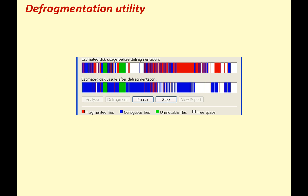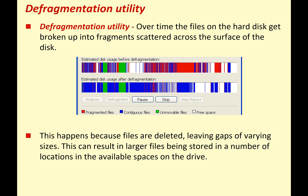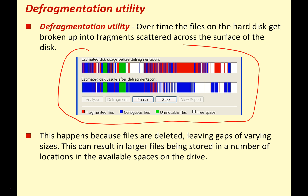Let's look at some other utilities you're going to need. The first one for your exam is a defragmentation utility. Over time, the files on your hard disk drive get broken up into fragments scattered around the surface of the disk. This happens because files are deleted, leaving gaps of varying sizes, which can result in larger files being stored in a number of locations in the available space on the drive. Here in the middle we've got a disk defragmentor running, showing a very fragmented hard drive with lots of files split up all over it.